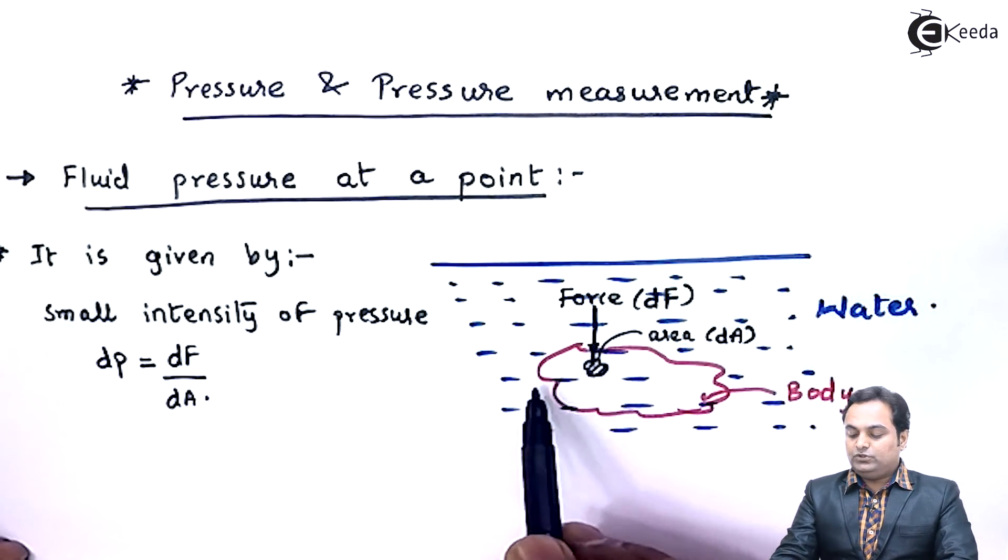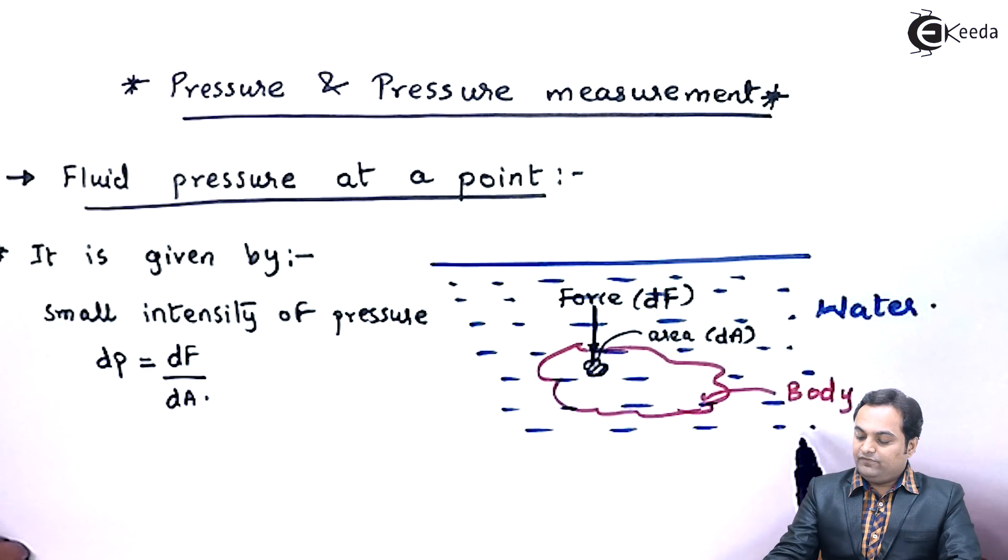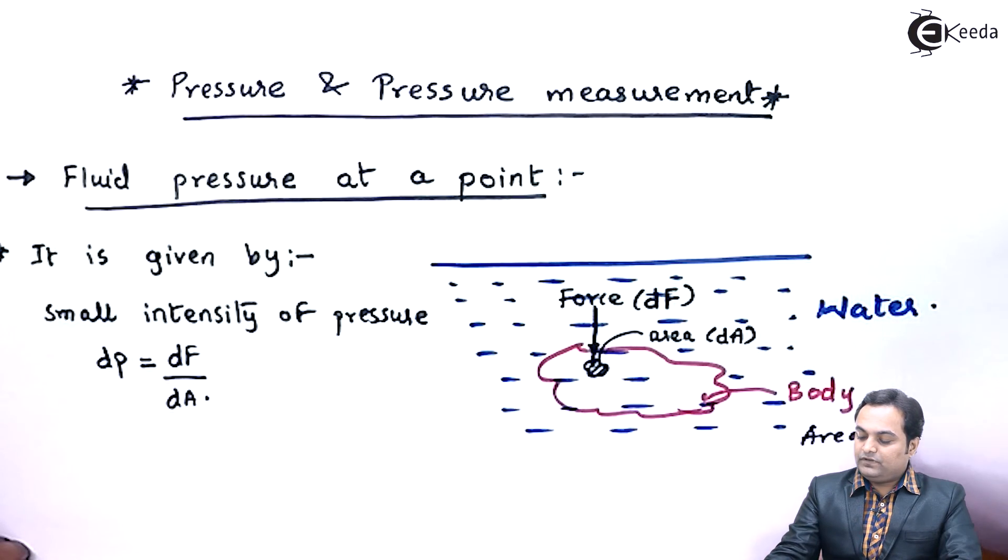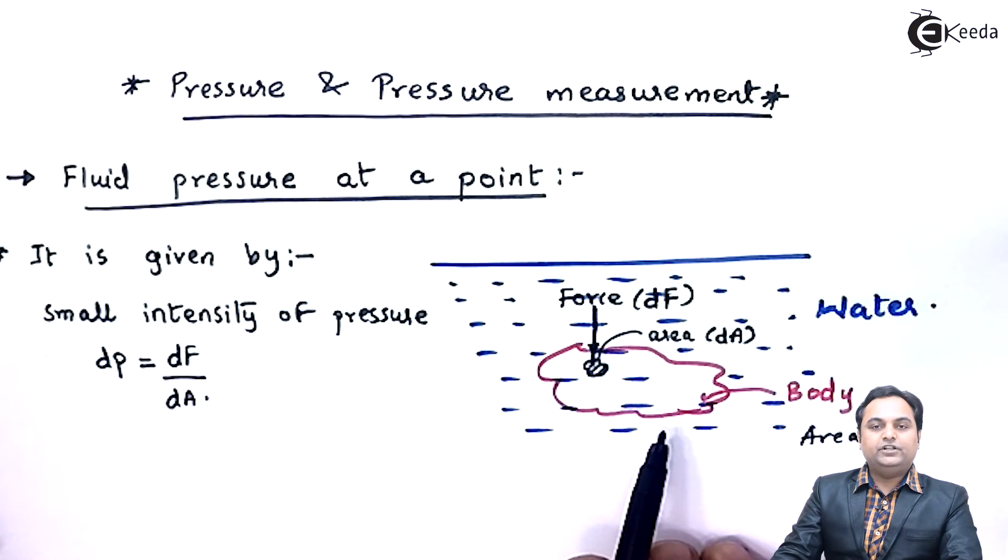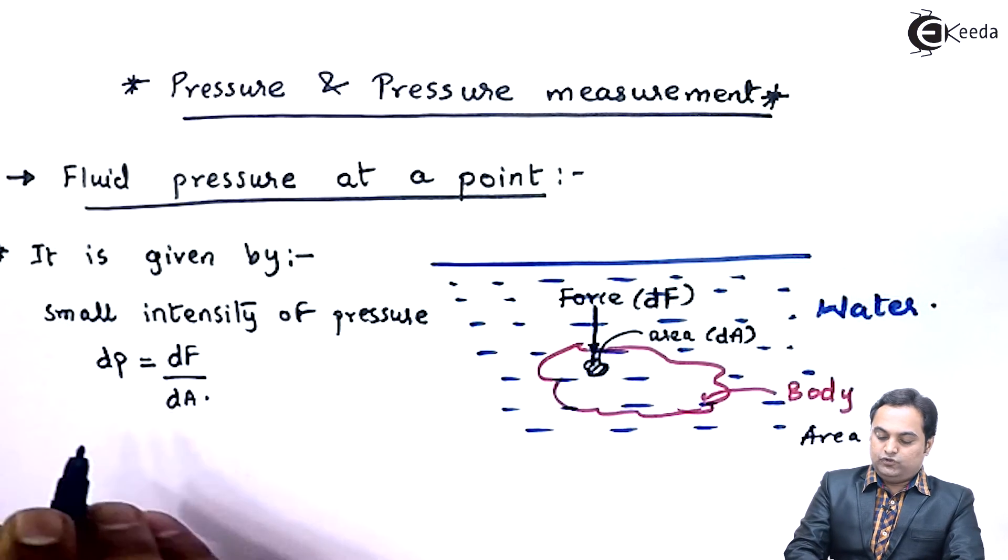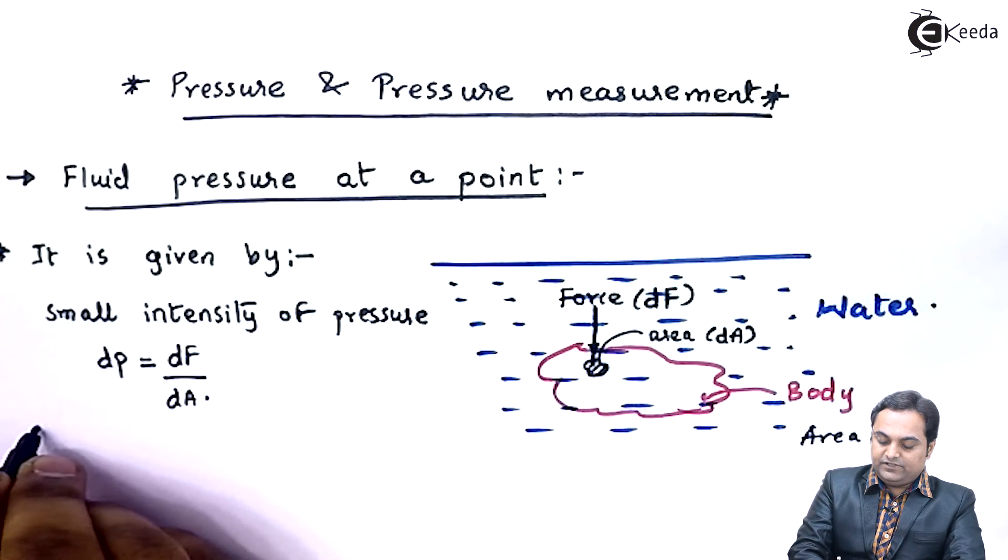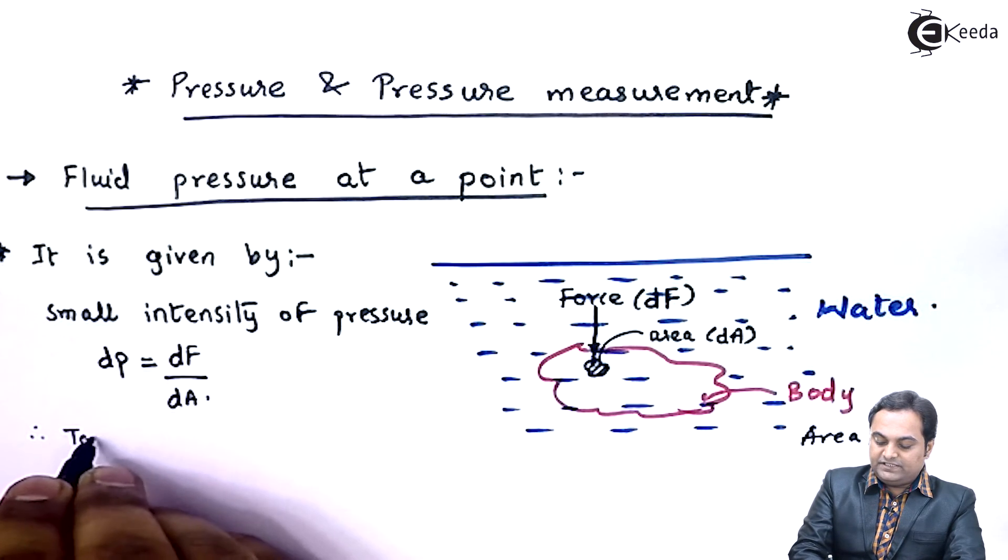Now if I consider the total area of the body which is capital A, so the force which would be acting on this body having area capital A would be denoted by capital F. So finally I will say that therefore total intensity of pressure...